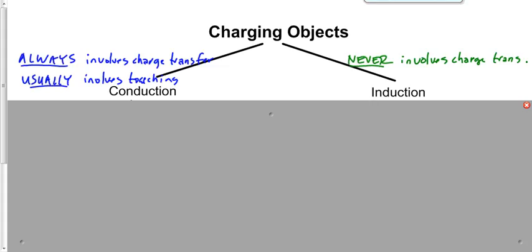You walk across the carpet in a dark room, stick out your finger, and you touch somebody — you zap somebody. That's conduction. Usually it involves touching, but every once in a while, if you build up enough charge, you can actually feel the conduction taking place just before you make contact. We still call it conduction in both cases — usually it involves touching, but occasionally electrons can arc from one object to the other.